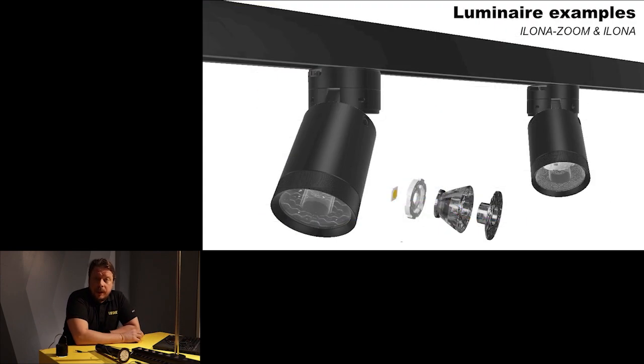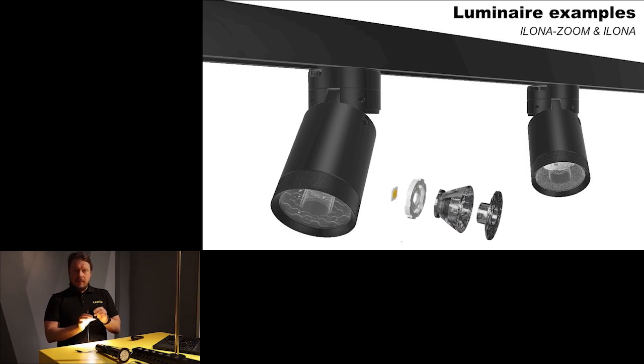Here we have a couple of luminaire examples realized with the Ilona Zoom and the fixed Ilona. As you can see, the luminaire construction itself is the same. In the case of Ilona Zoom, we have this rotating trim ring, and with the fixed beam Ilona, we can have the same ring fixed. It's still providing a very nice finalized design of the luminaire, helping to hide away all the technical parts and giving it a really finalized outlook.